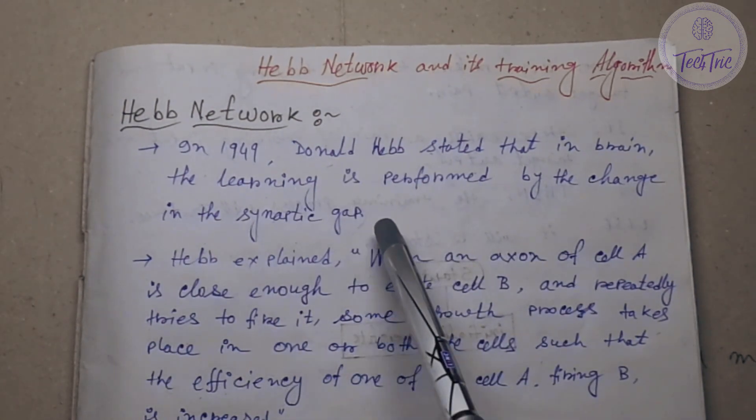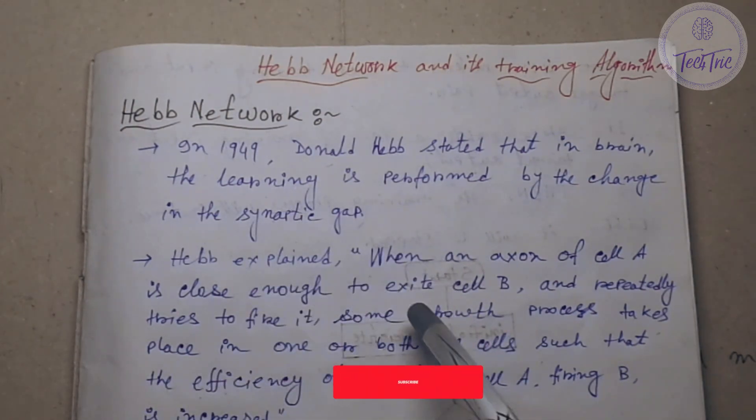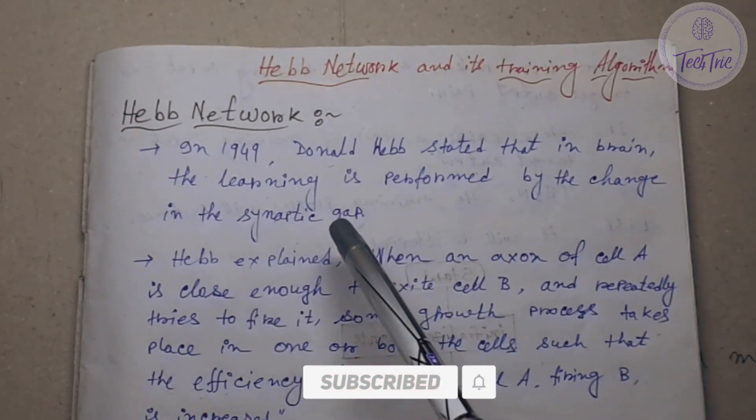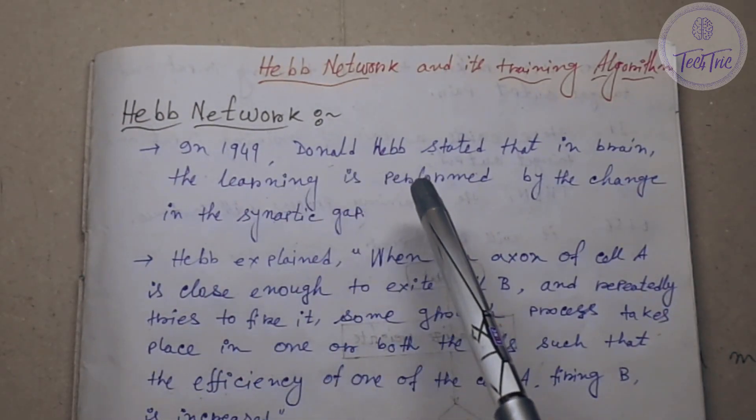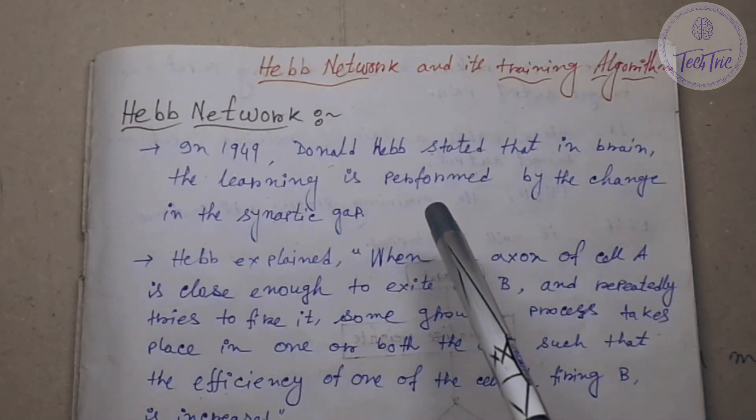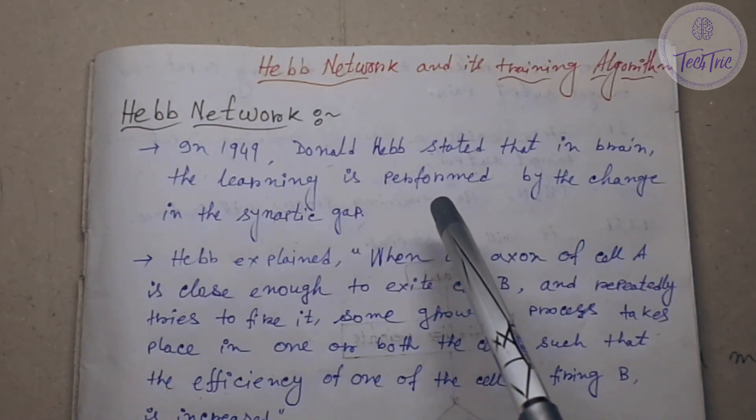As you know, artificial neural network basically mimics our brain and synapse, axon, these are present in our neurons. If you don't know what is synapse, axon, there is a link in the description box below. Please go and watch that video. I have already discussed about this in the what is artificial neural network video.